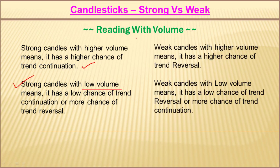Weak candles with higher volume means there is a higher chance of trend reversal. And weak candles with low volume means a low chance of trend reversal and more chance of trend continuation. So if you see any weak candle with higher volume, you may assume the preceding trend may get reversed. If you see a low-volume weak candle, then you may assume the preceding trend may continue further.